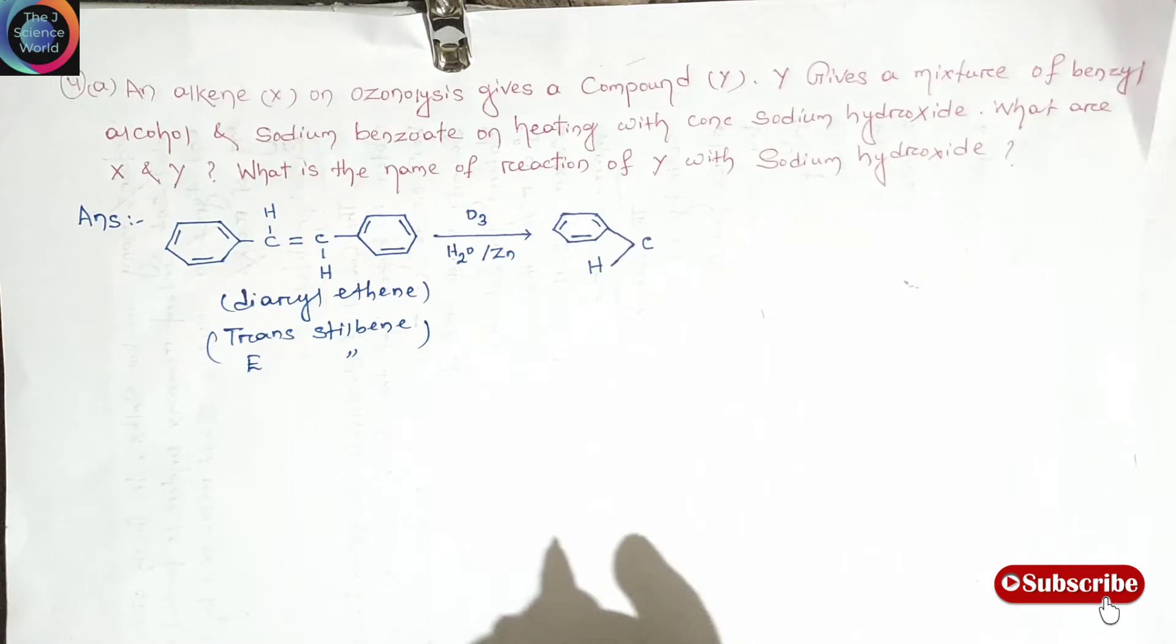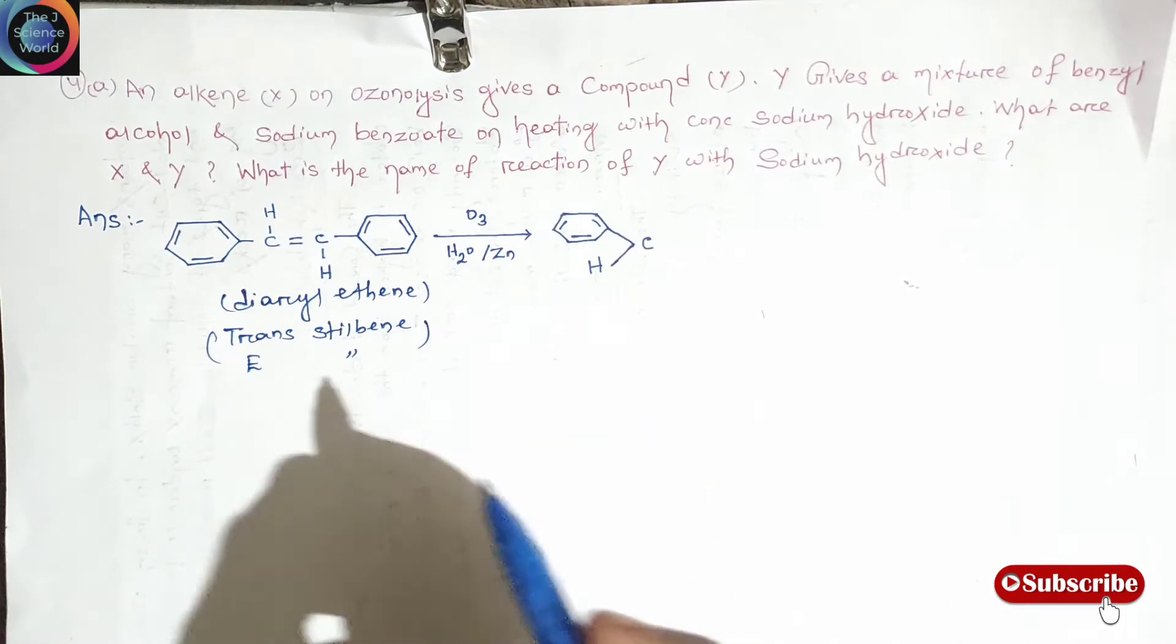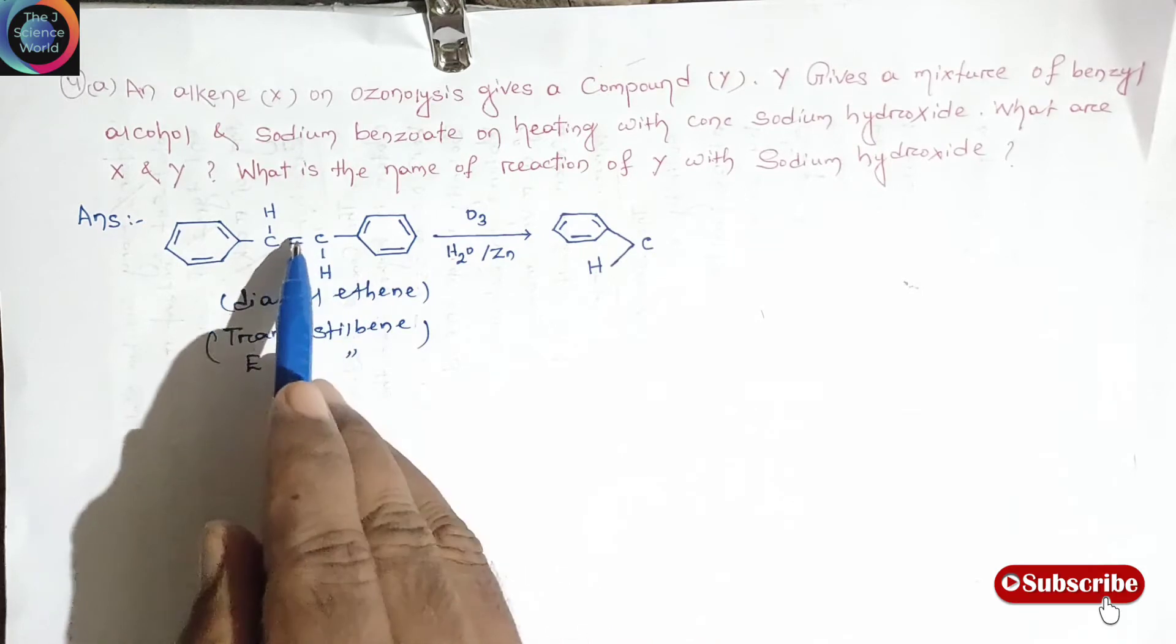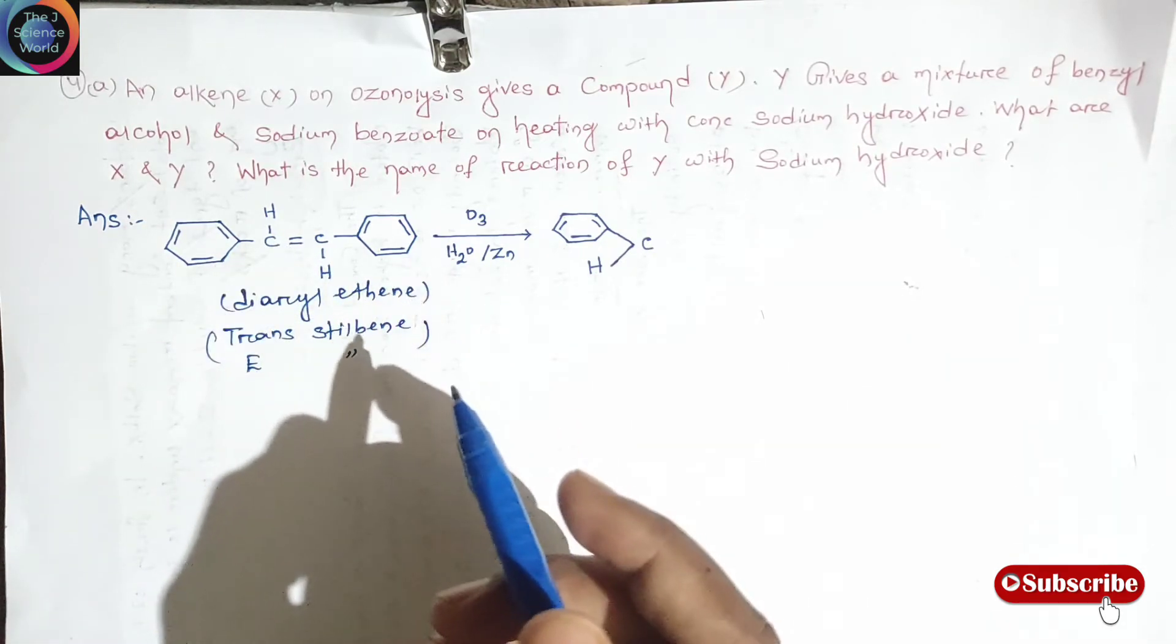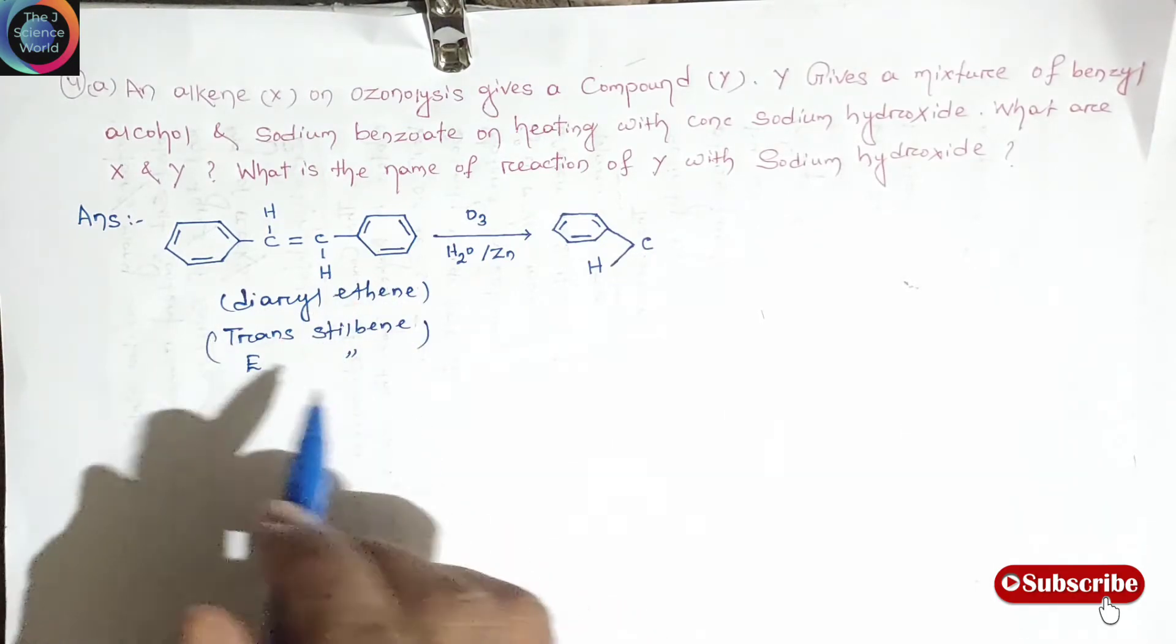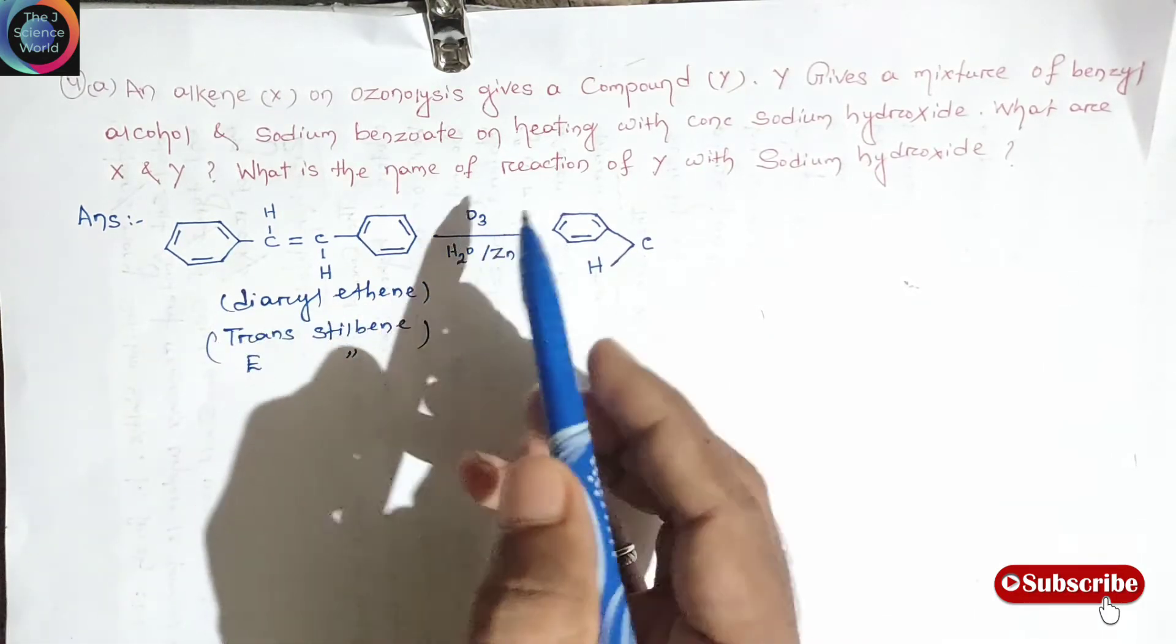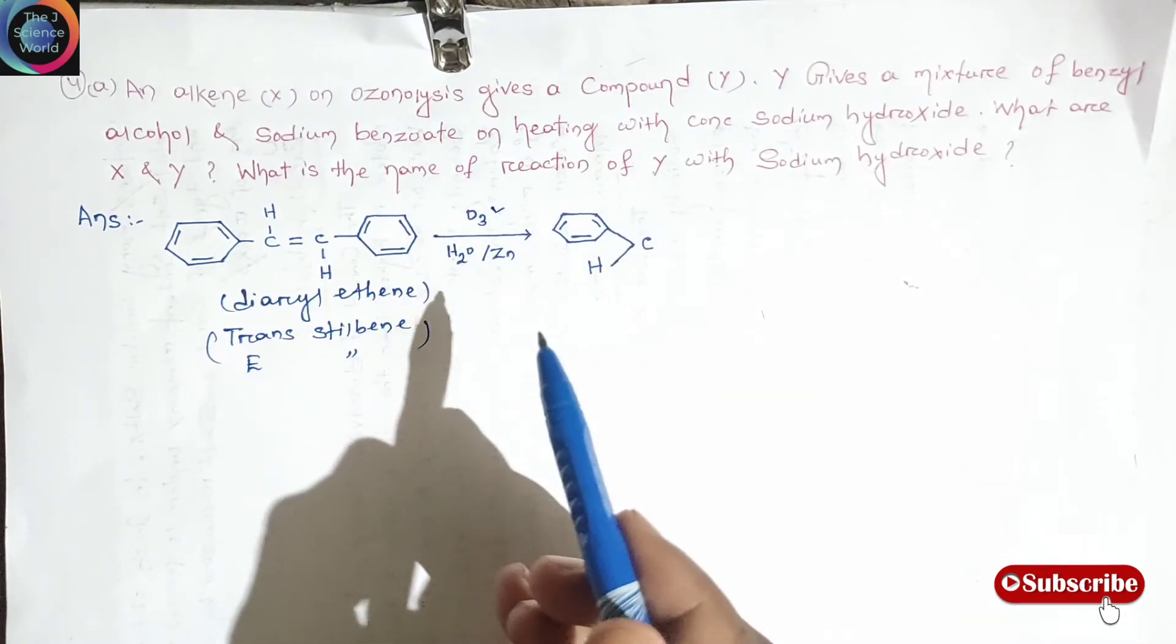Let us look at the ozonolysis reaction. Let me tell you a trick also how to do the reaction. Ozonolysis is a cleavage reaction, means a reaction in which the double bond is completely broken and alkene molecule is converted into two smaller molecules. It consists of two separate reactions.